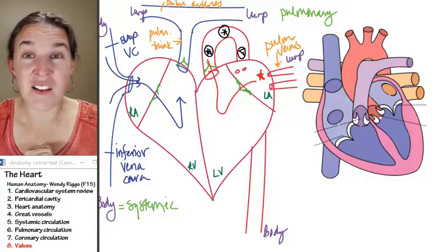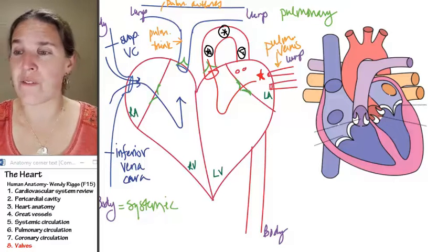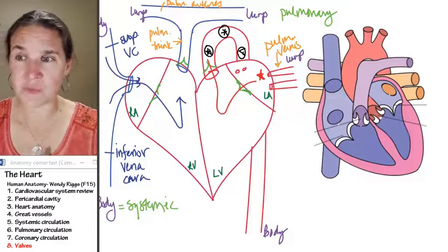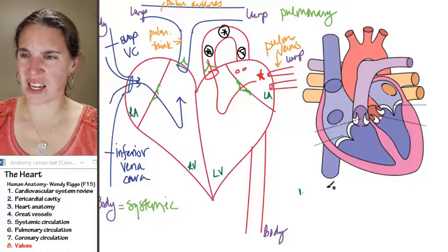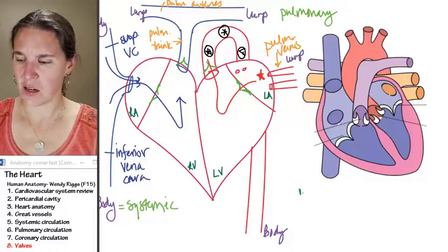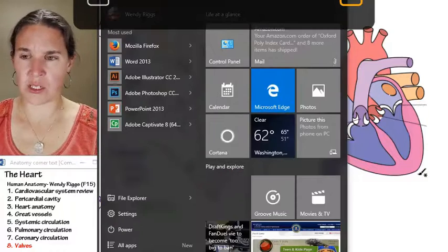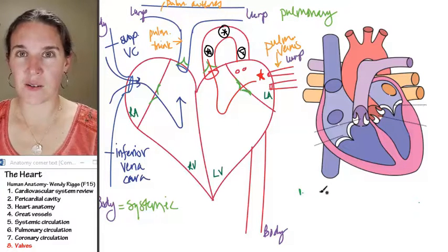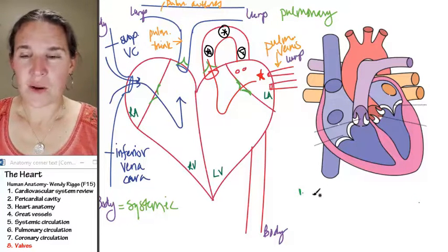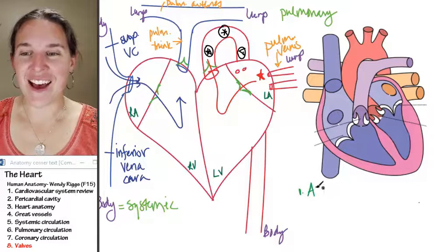There are three types of valves I want to talk about, and only two of them are found in the heart. So, who are they? The first valves I want to look at are called AV valves.